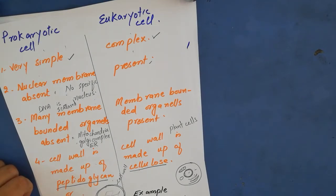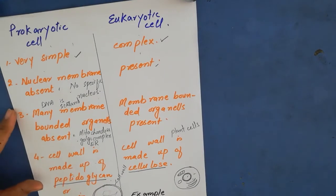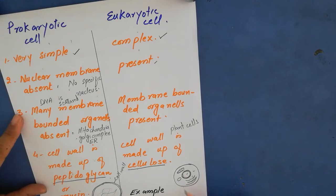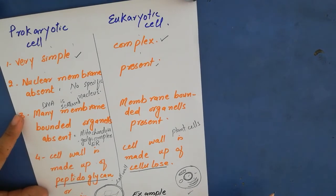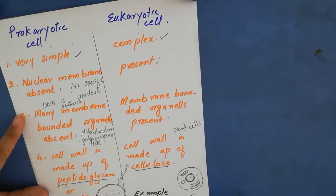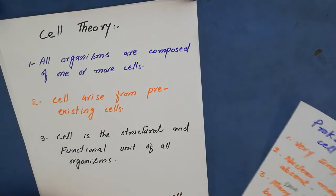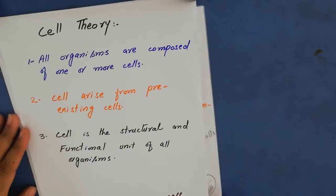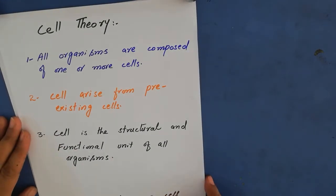Examples of prokaryotic cells are bacteria and cyanobacteria — bacteria is strictly prokaryotic and unicellular. Cyanobacteria is also a prokaryotic organism. Eukaryotic cells include algae, fungi, plants, and animals — they are all eukaryotic.